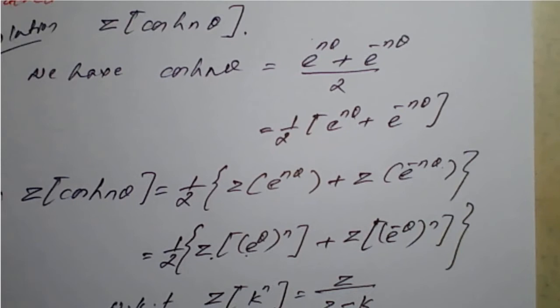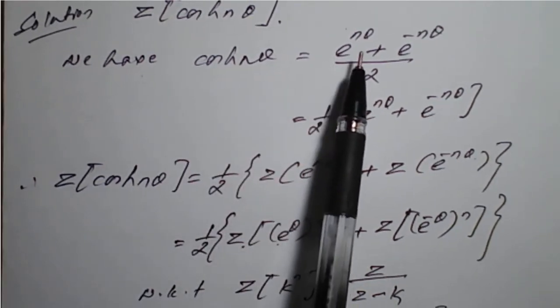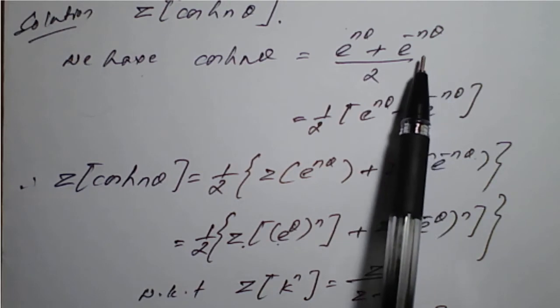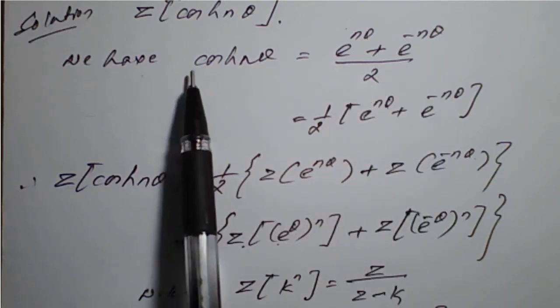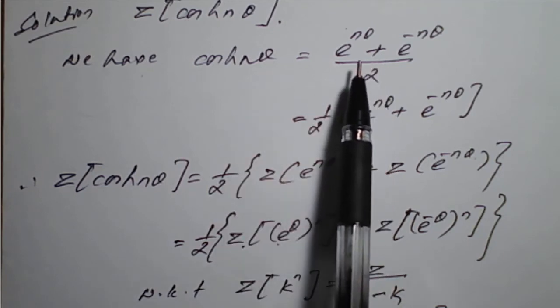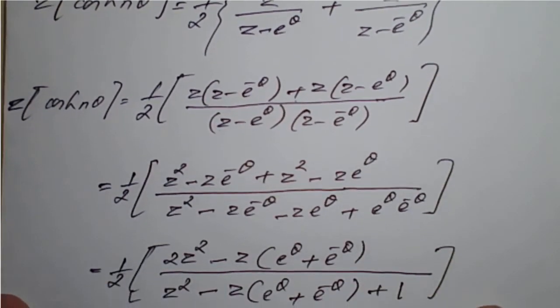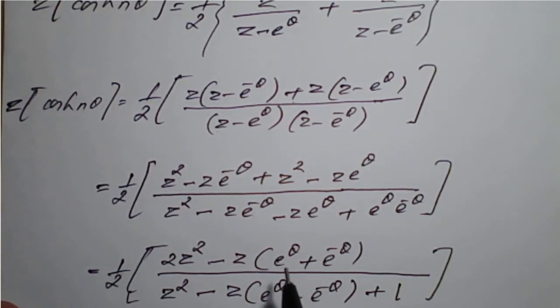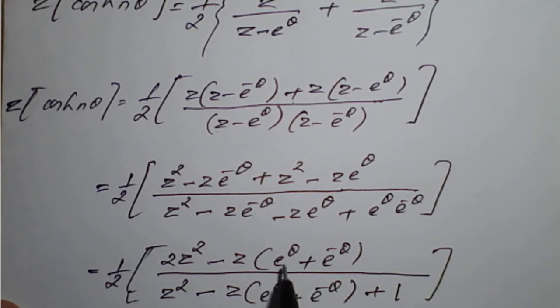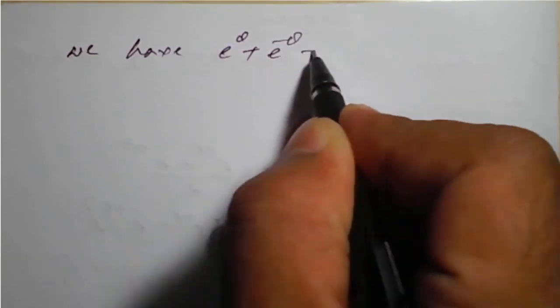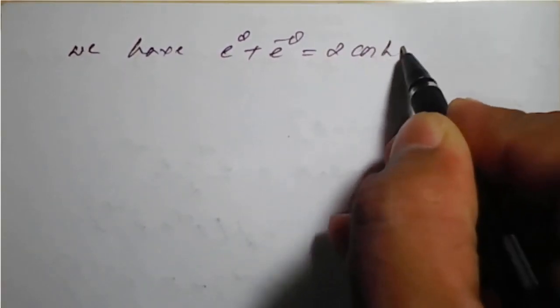Recalling that cosh(nθ) = (e^(nθ) + e^(−nθ))/2, so e^(nθ) + e^(−nθ) = 2·cosh(nθ). Here we have only e^θ + e^(−θ), so it equals 2·cosh(θ). We replace e^θ + e^(−θ) with 2·cosh(θ).